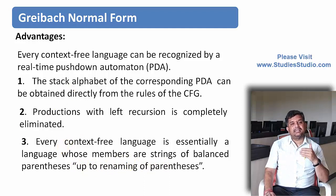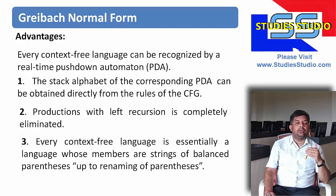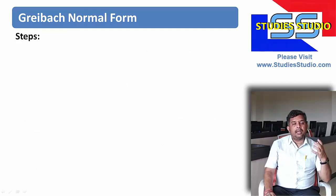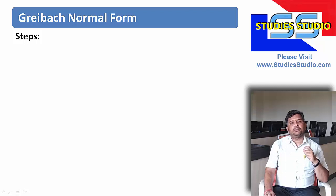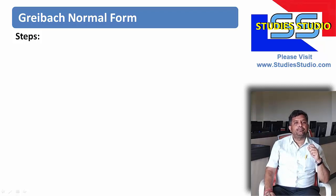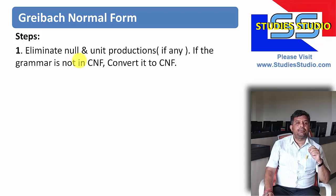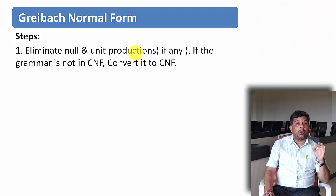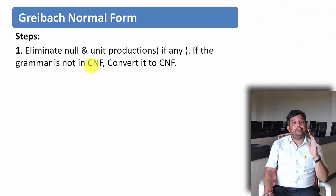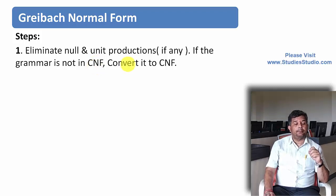Let us see what steps we are going to follow when converting a context-free grammar to its corresponding Greibach Normal Form. The first step is: if the grammar contains null productions or unit productions, we must eliminate them. And if the grammar is not in Chomsky's Normal Form, then first convert it to Chomsky's Normal Form.